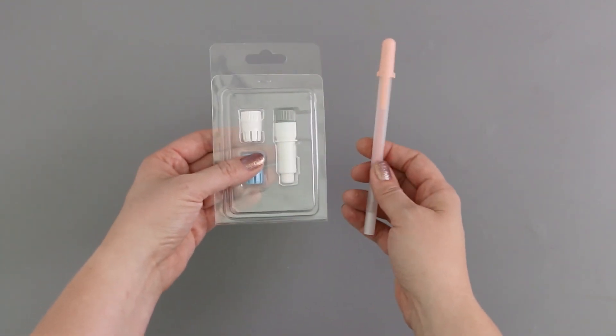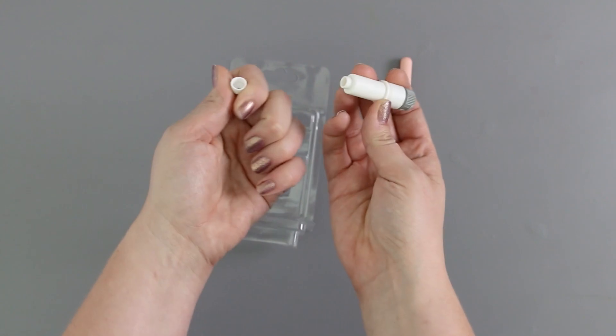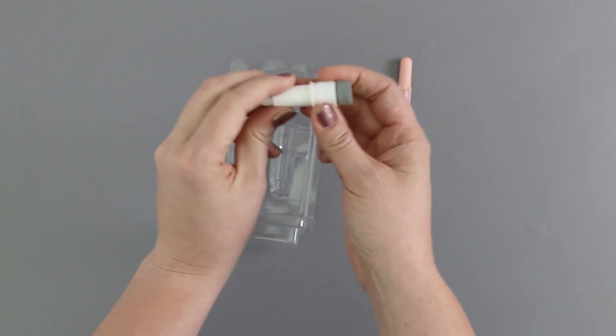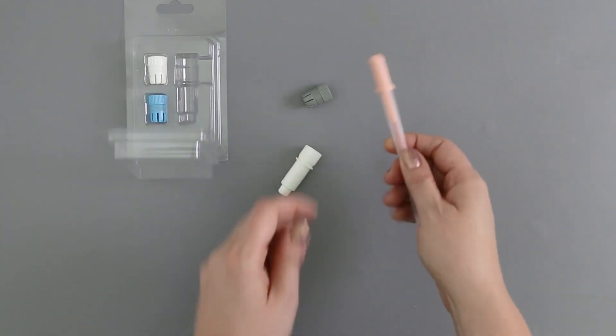The pen holder is a great option because it allows you to sketch with all kinds of pens. It comes with a pen cap, the main body of the pen holder, and then three different sized collets or collars that hold the pen in place.